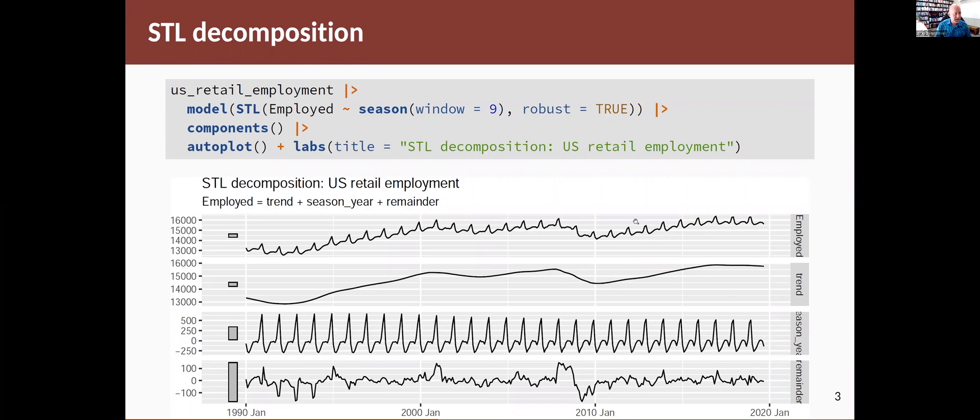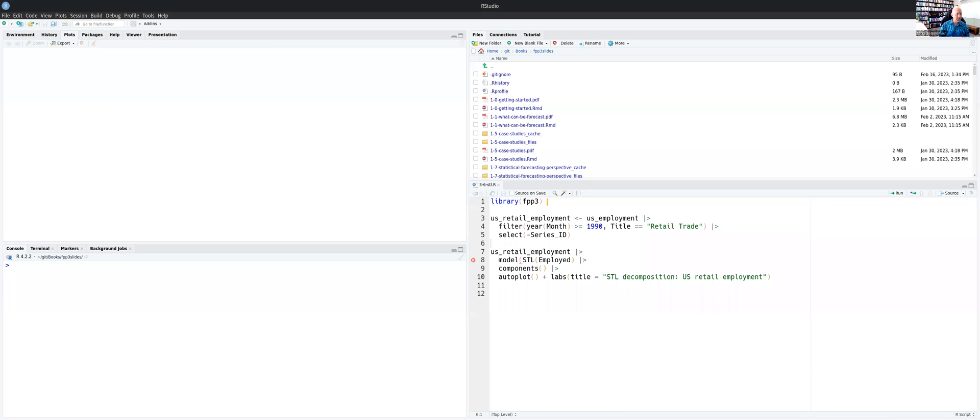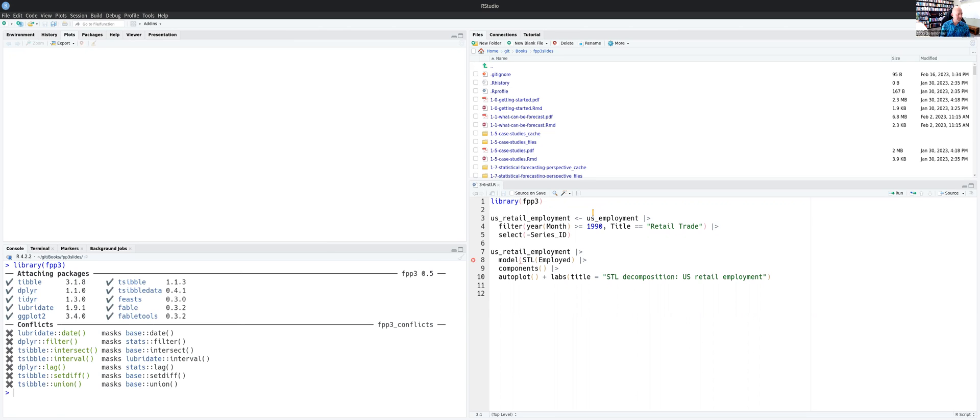So let's look at an example that we've looked at before with other methods of decomposition, but let's see now what more things we can do with STL. I'll switch to R and we'll load the packages and we'll create the dataset that we've been using throughout this chapter.